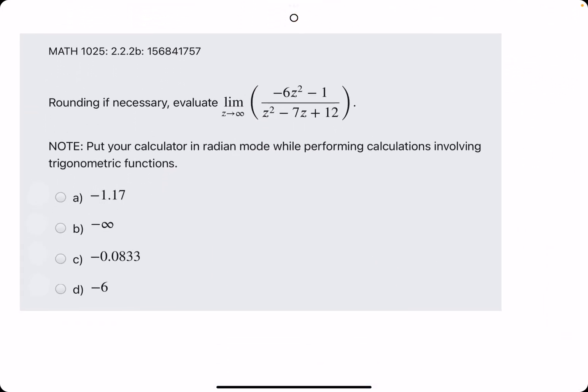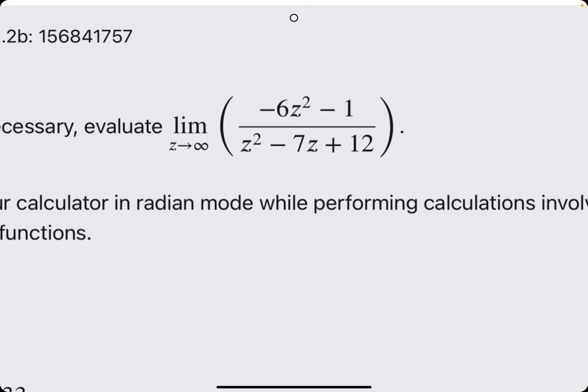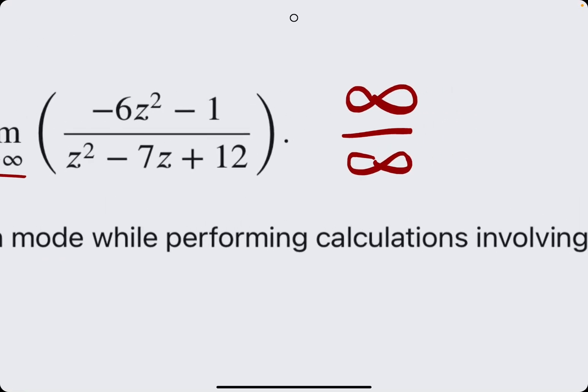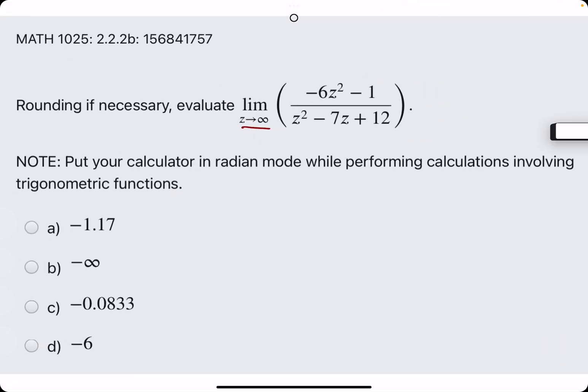Second example. Again, the first thing we want to try is plugging in the value. However, in this case it's infinity. So you would think if we just plugged in infinity on top and bottom, we'd probably get infinity over infinity, but the question is what can we do with that?